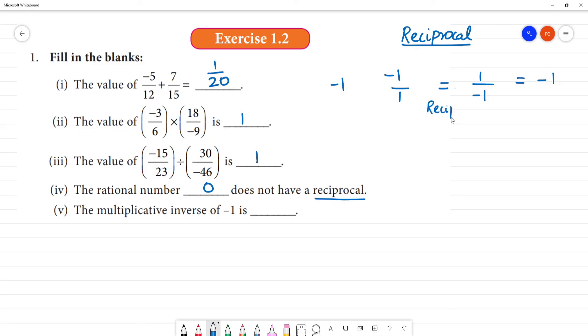This is reciprocal. What is reciprocal? We change the denominator and numerator. We get 1 above and minus 1 below. Now, plus by minus is again minus. The multiplicative inverse of minus 1 is minus 1. The answer is minus 1.